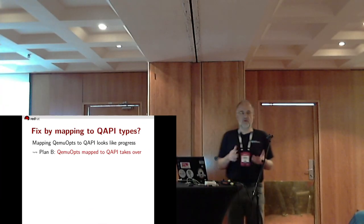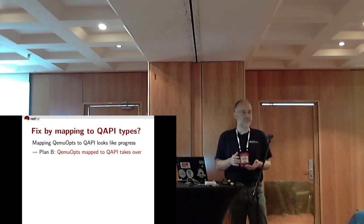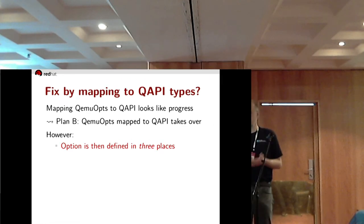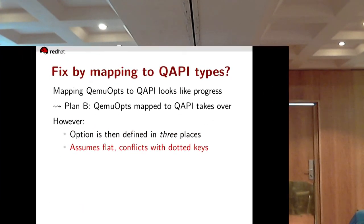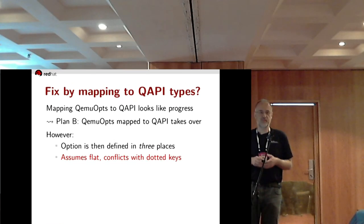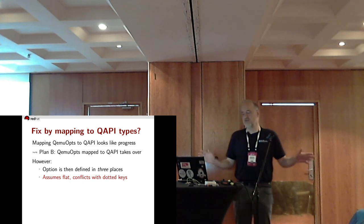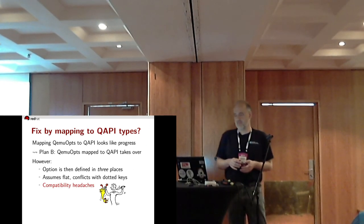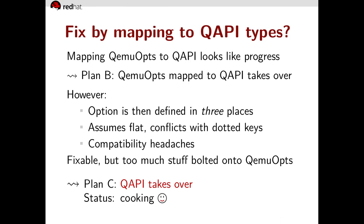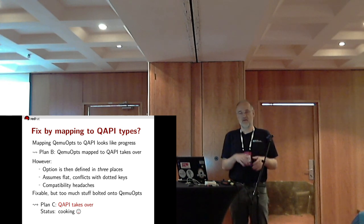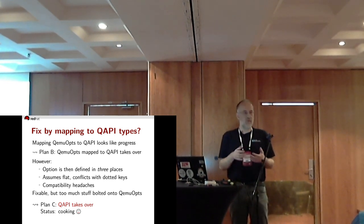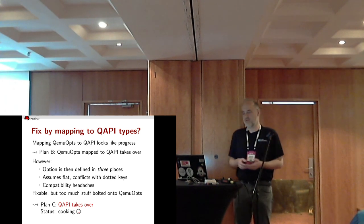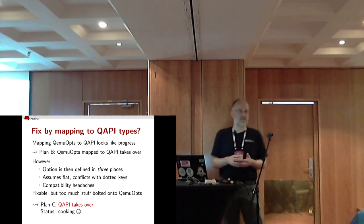So this mapping of QEMUopts to QAPI looks like progress — maybe QEMUopts-mapped-to-QAPI should take over. Well, not so fast. Options are then defined in three places, which is starting to get ridiculous. More seriously, the mapping code is built around the design assumption that everything is flat, and that conflicts with dotted keys. Moreover it only adds to our compatibility headaches. This is all fixable, but I feel strongly there is way too much stuff bolted on QEMUopts — workarounds, hacks. QEMUopts was a fine design back then, but our needs have grown and we've outgrown it. It's time to scrap it and start over.